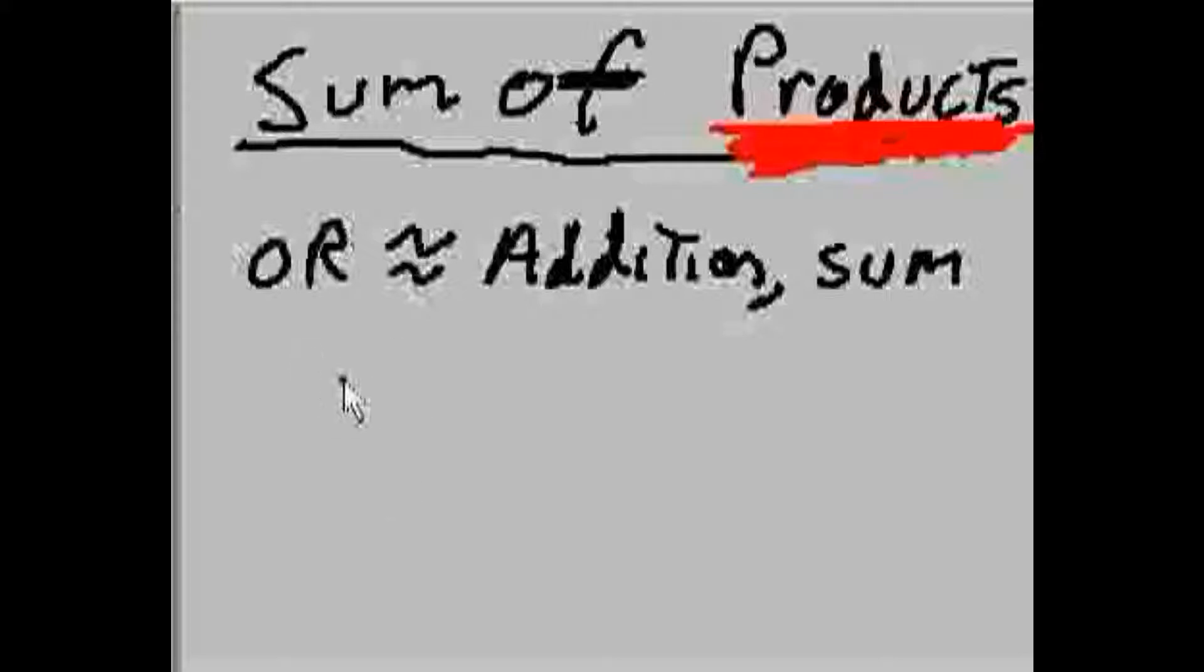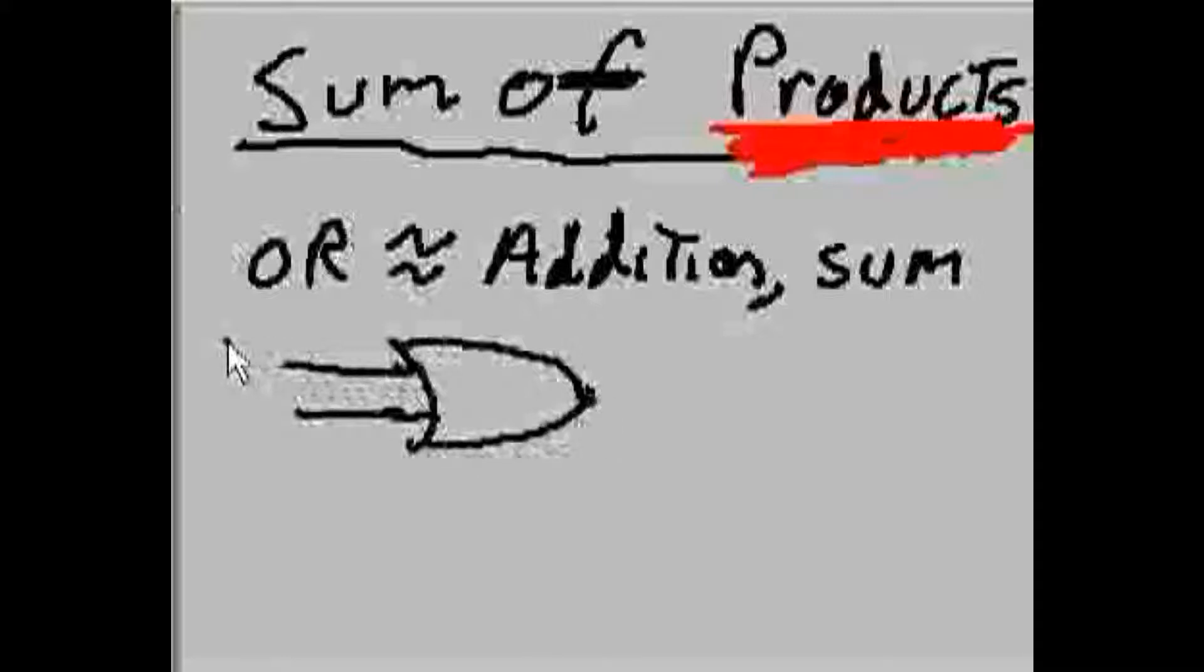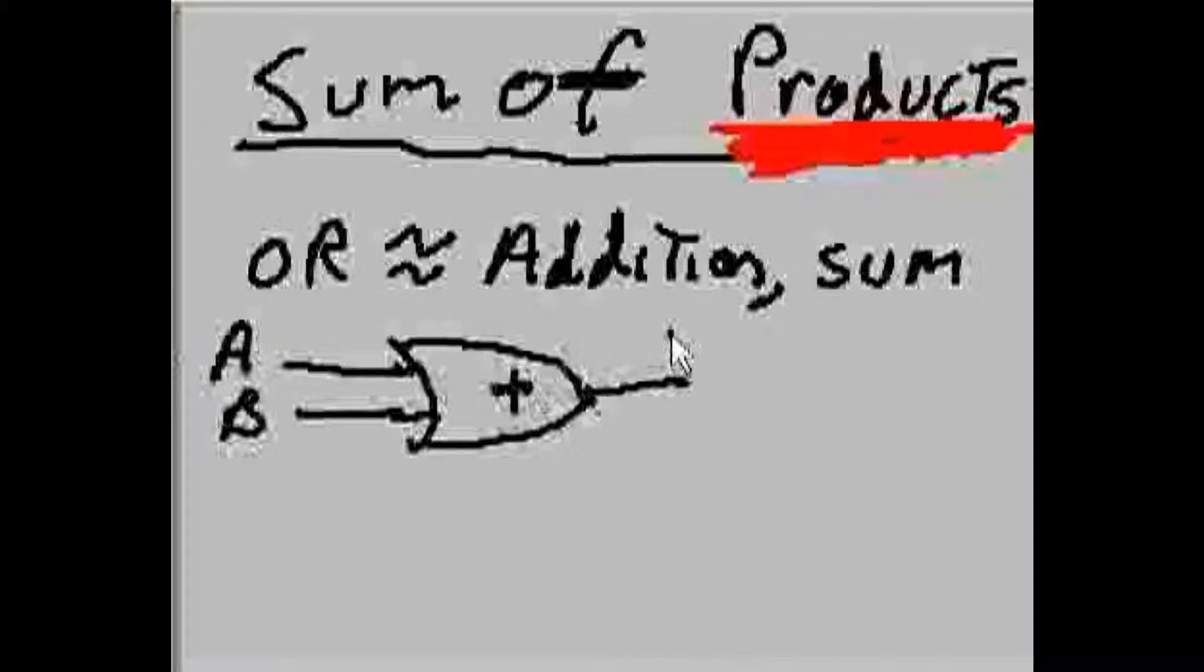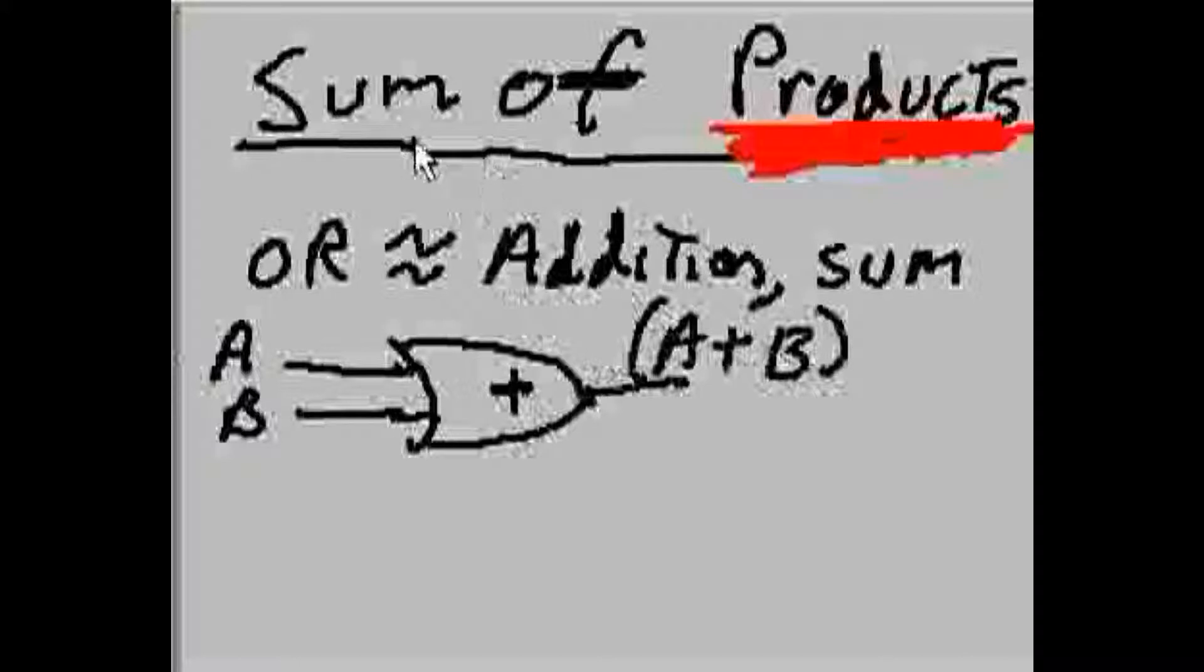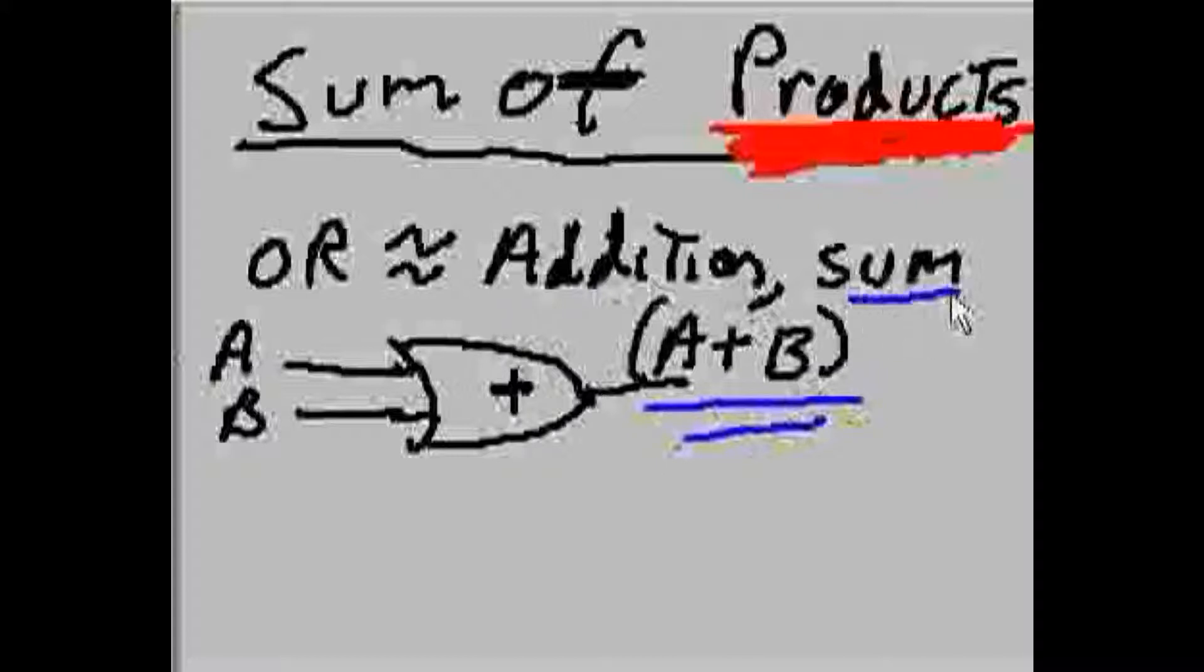So, if you have yourself a two-input OR gate of A and B, you'll notice on the device it'll be a little cross there, addition sign. And so, this will be considered A OR'd with B. OR and addition and sum go hand-in-glove. So, this is the sum operation.